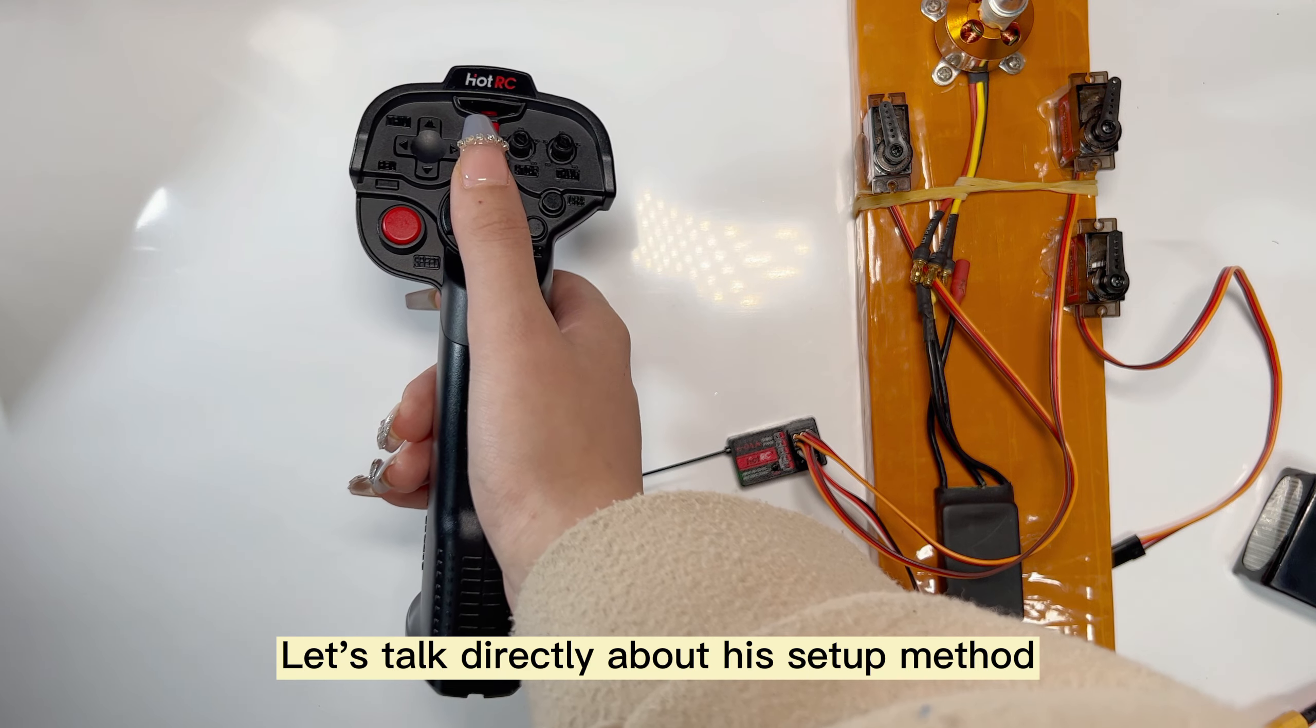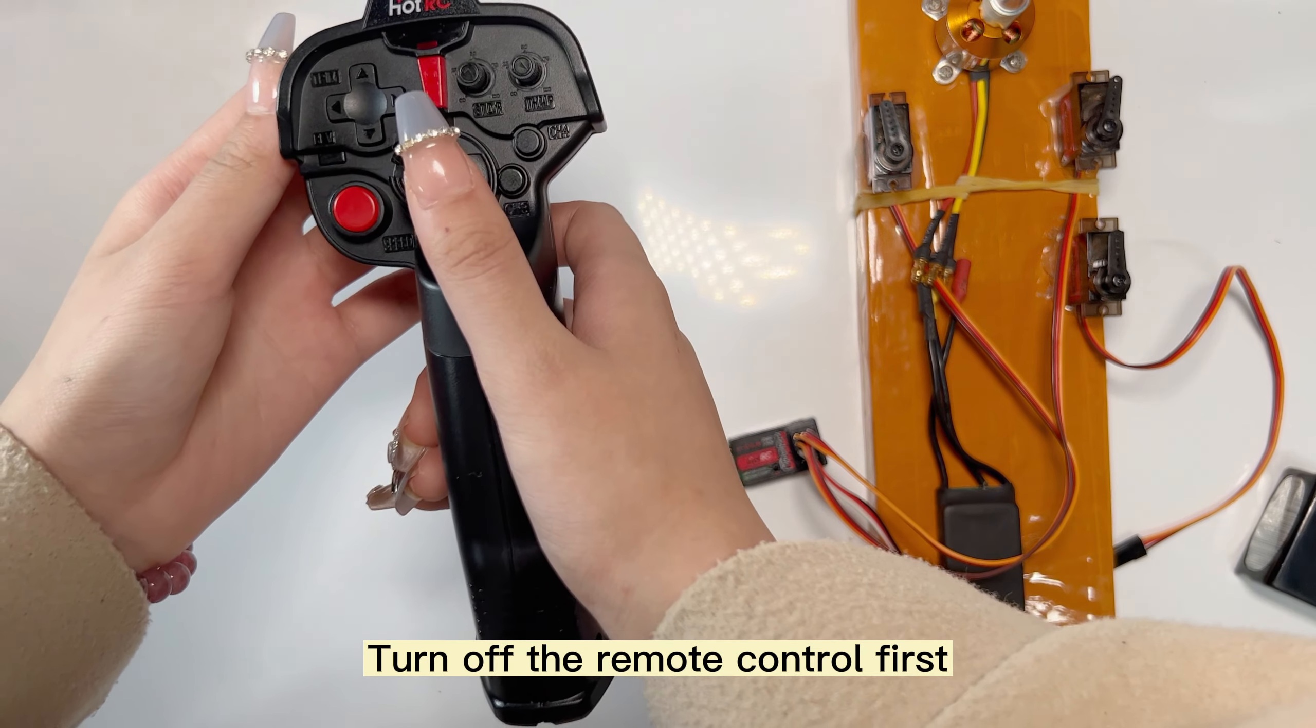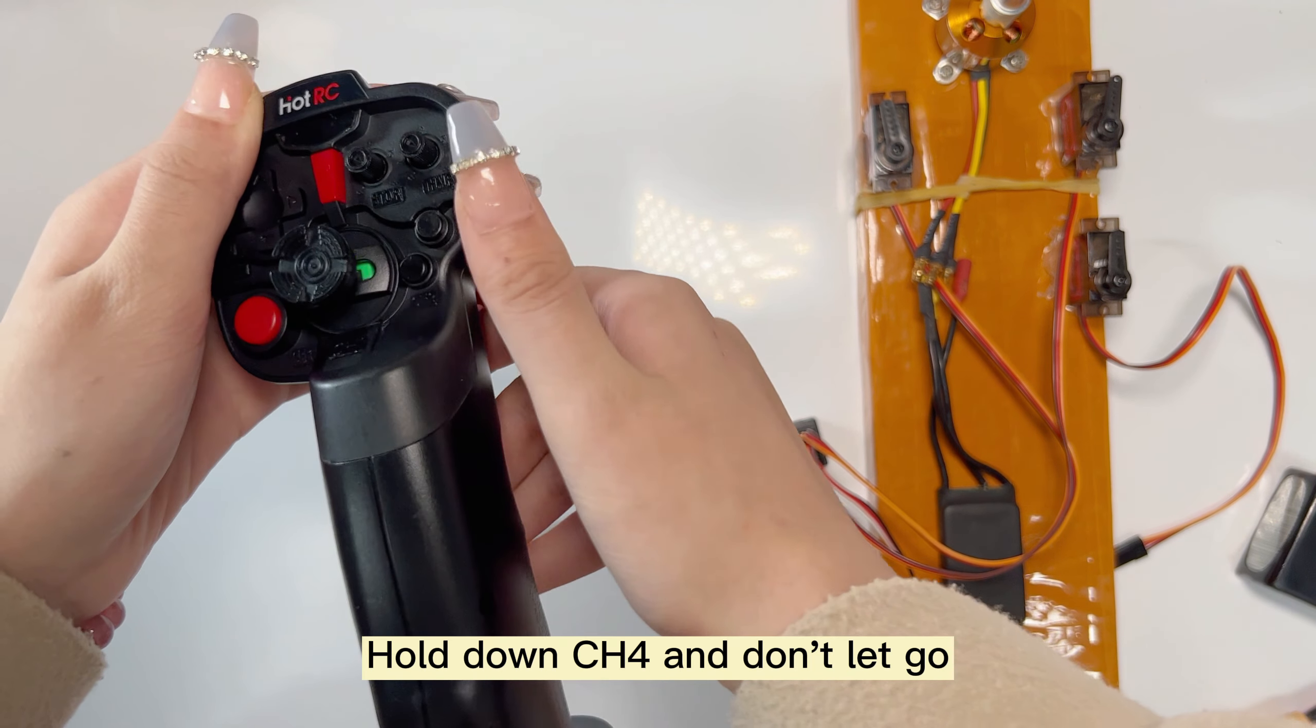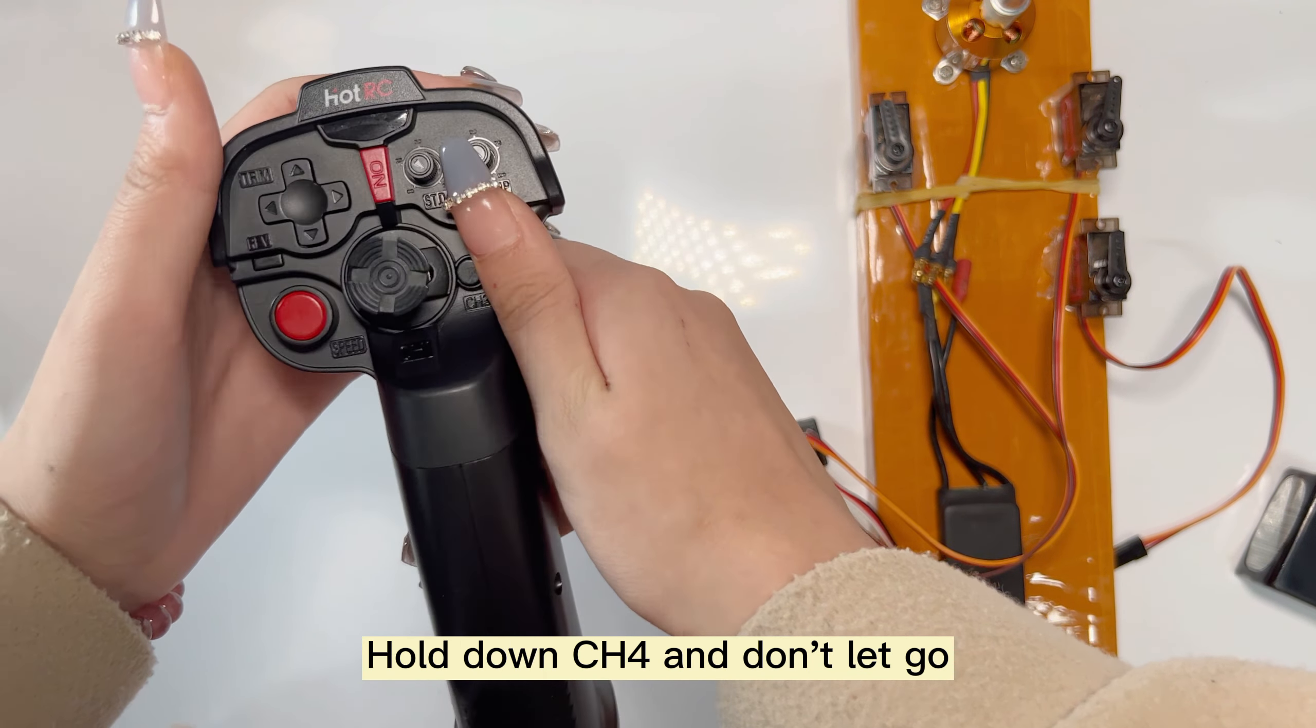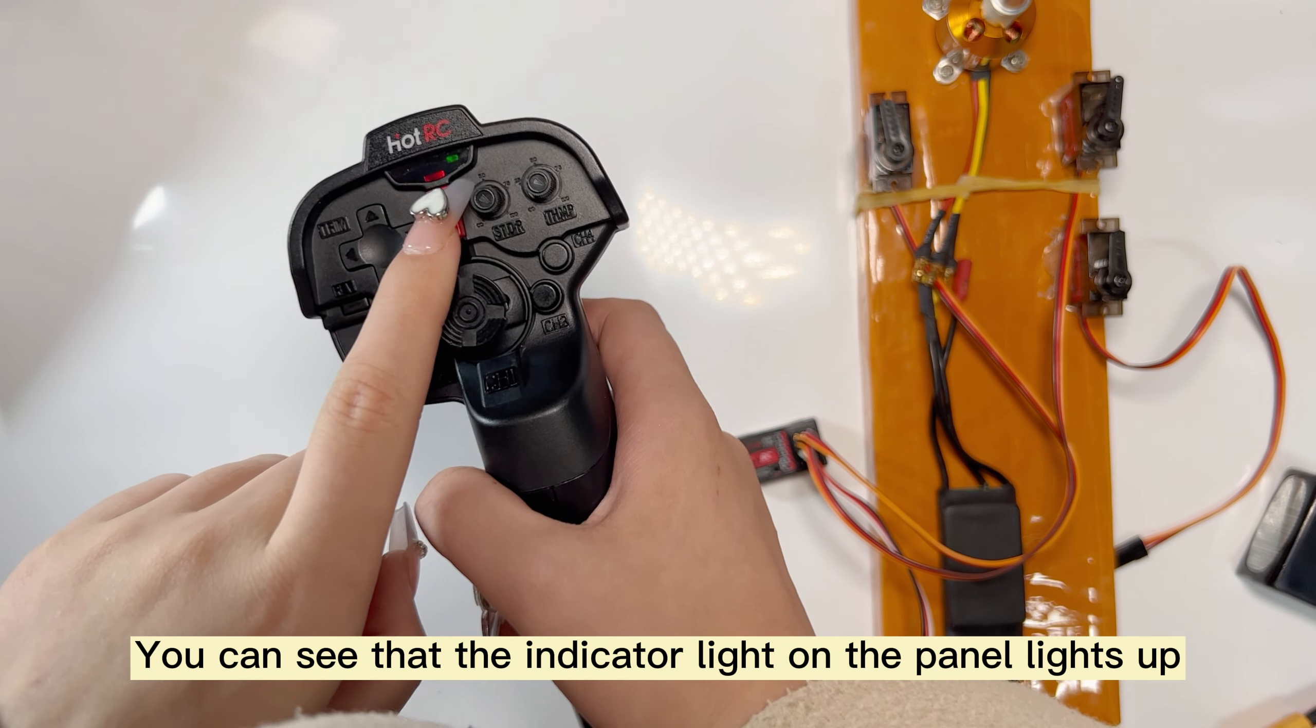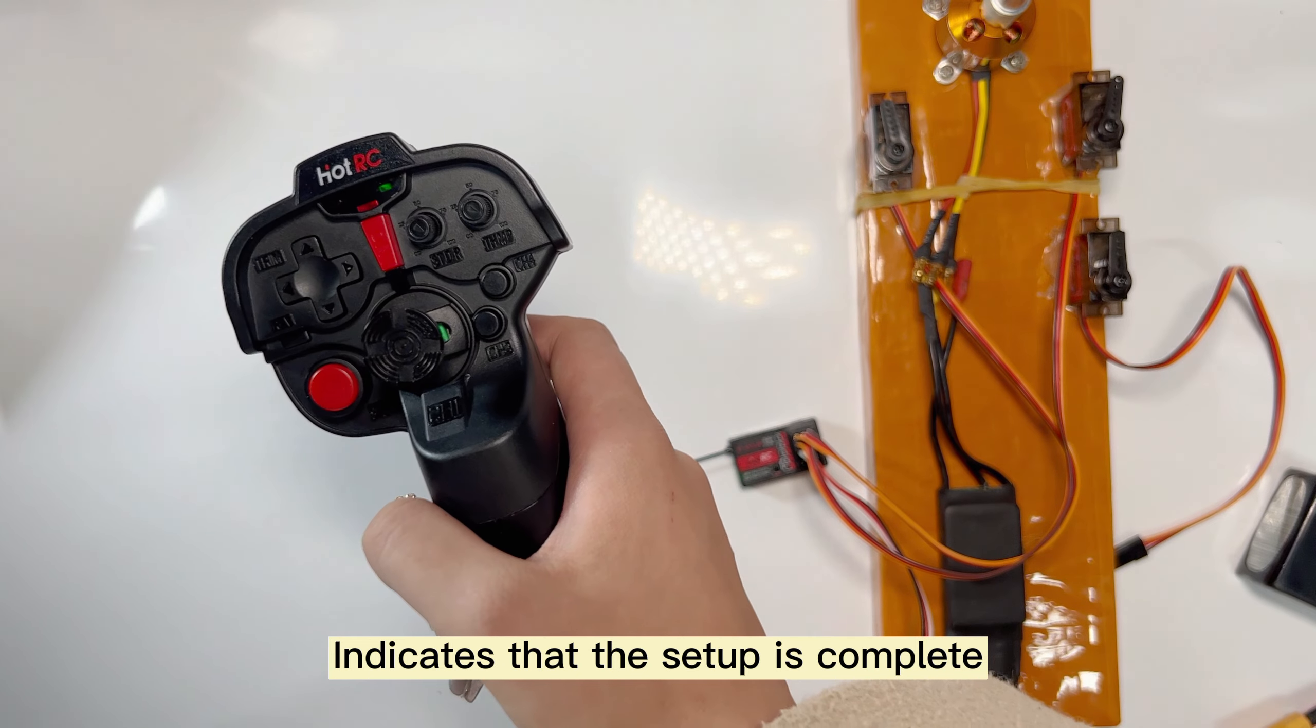Let's talk about the setup method. Turn off the remote control first. Hold down CH4 and don't let go. Turn on the remote control at the same time, then release. You can see the indicator light on the panel lights up, indicating the setup is complete.